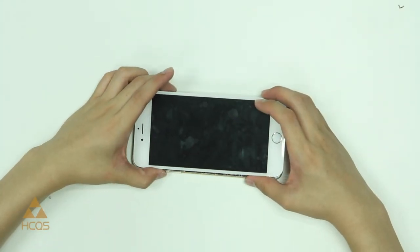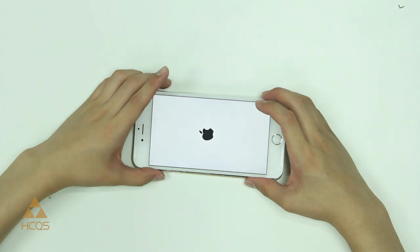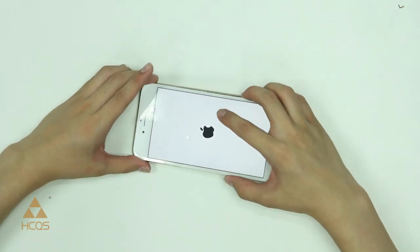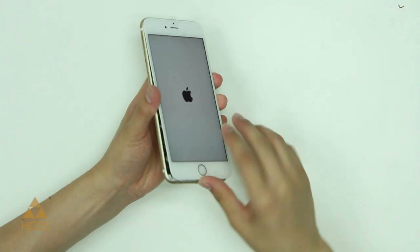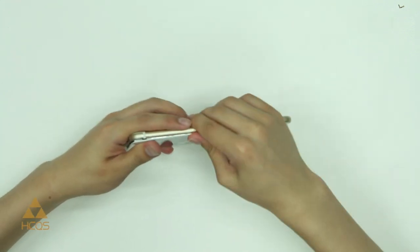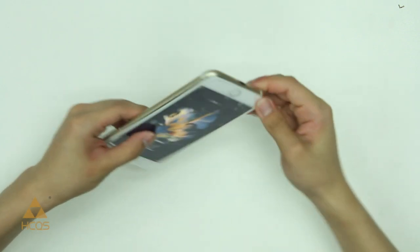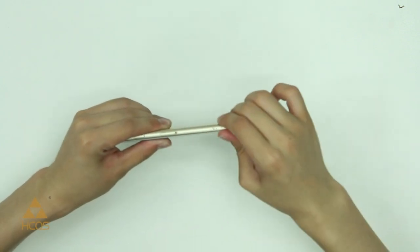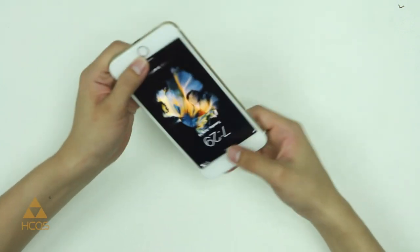Remember to tuck in the top end of the screen underneath the edge of the rear housing and then you can just work your way around. This should not require a lot of pressure and you do not want to press too hard on the center of the screen. If you're finding that you're having trouble getting the screen to seat, there is probably a problem on the inside.